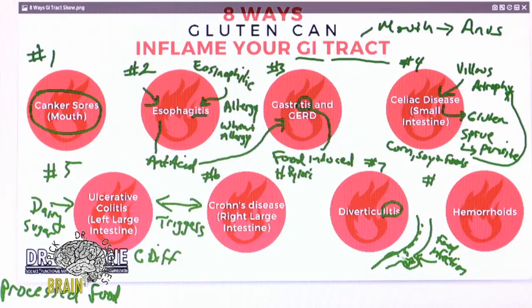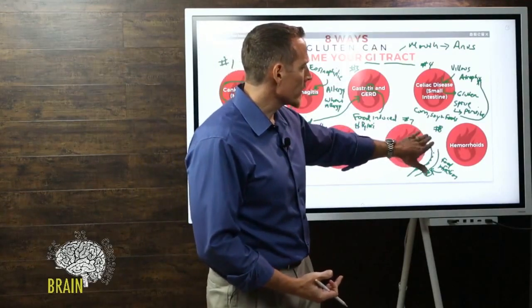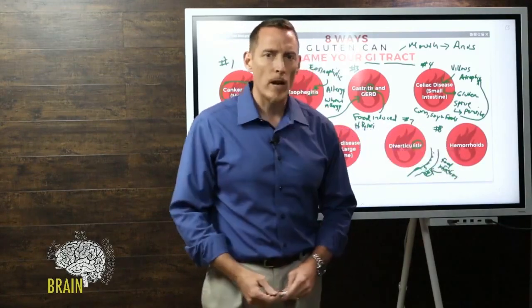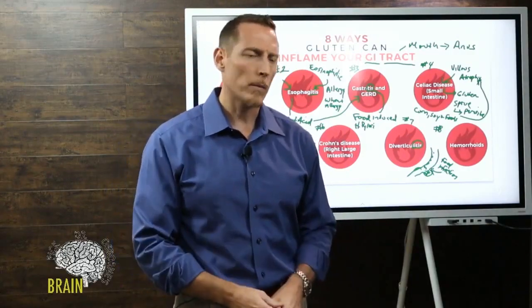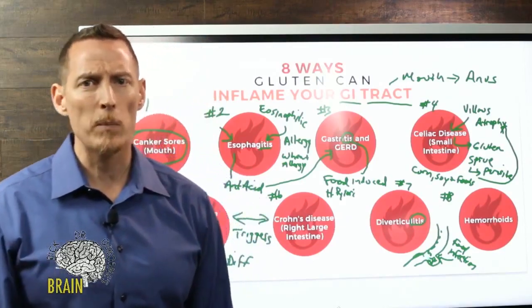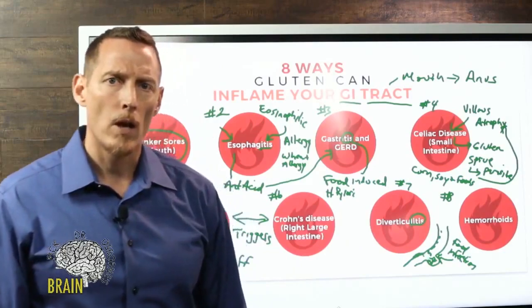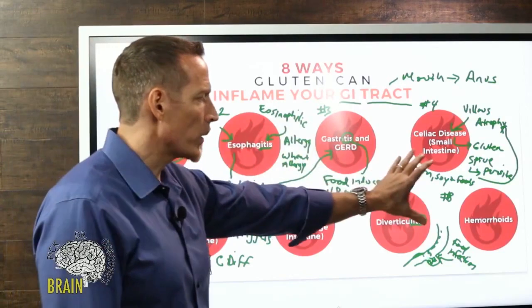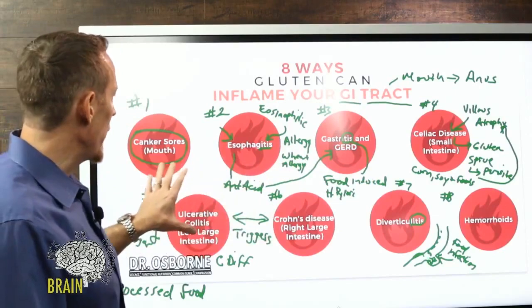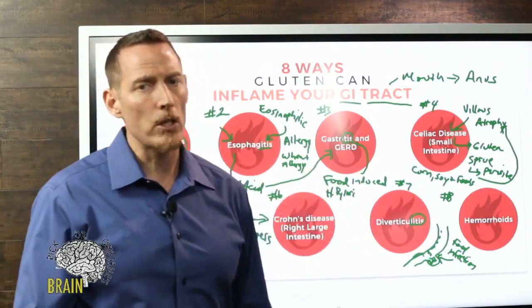Number eight is hemorrhoids. Gluten by itself can cause hemorrhoids — many people with chronic hemorrhoid issues see them resolve when going gluten-free. Other contributors include the pressure from pregnancy and chronic constipation. Gluten often causes chronic constipation rather than diarrhea, which increases the risk for hemorrhoids. These are the eight ways we know gluten can create an inflammatory process in the GI tract, and addressing diet is the most important step you can take.